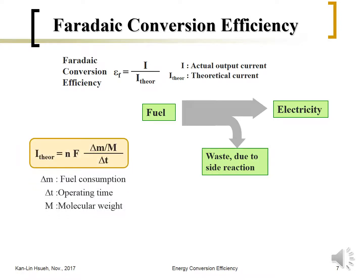If the hydrogen is not converted, it is treated as waste — it was supposed to generate electricity but did not. The theoretical current can be calculated by this equation: take the mass flow rate of fuel ṁ_fuel fed into the fuel cell, divide by the molecular weight to get the molar feed rate of fuel per unit time, then convert to the equivalent theoretical current that should be produced by that fuel feed. The faradaic efficiency is then the actual current output from the fuel cell divided by this theoretical current.